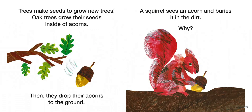Trees make seeds to grow new trees. Oak trees grow their seeds inside of acorns. Then they drop their acorns to the ground.